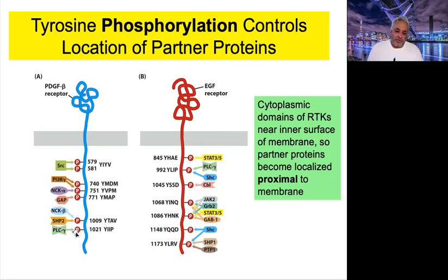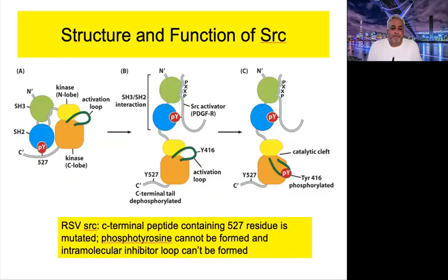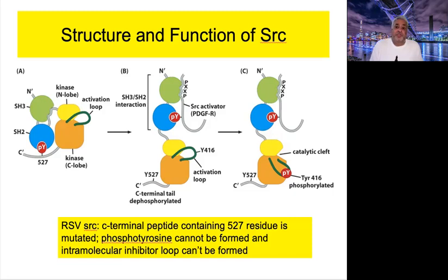SRC is normally inactive in normal cells and under the right conditions can be pulsed on for a burst of activity, then becomes quiet again. In many cancer systems, the activity of SRC is constitutive — meaning it's on all the time, unregulated.